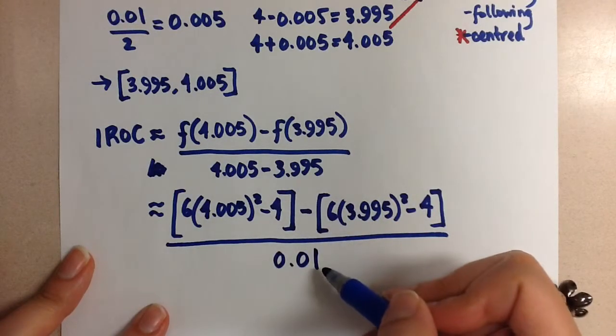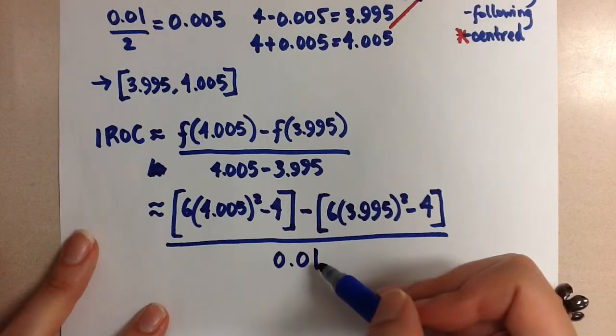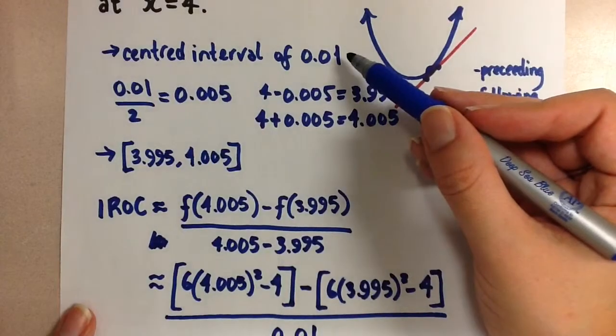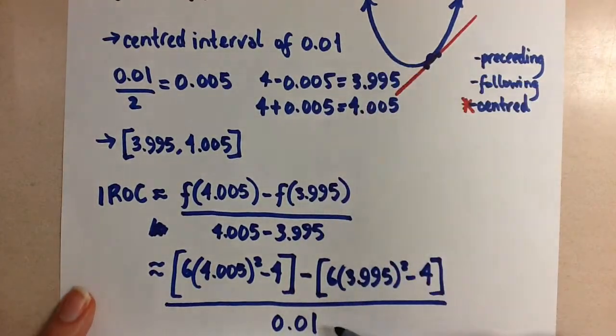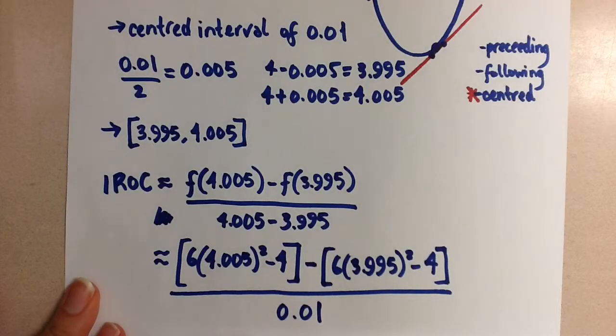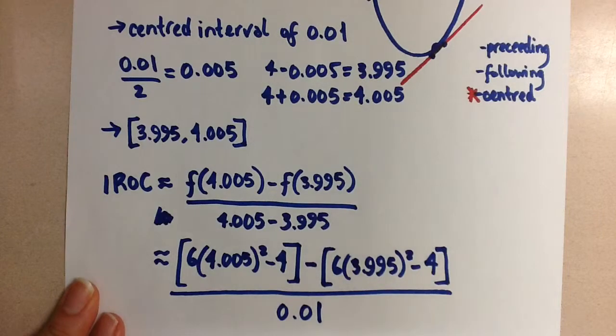This is good. If we've done our interval correctly, the denominator should always match the length of the interval that we chose at the beginning. So these two numbers have to match. Let's continue and calculate this. So here we get approximately 92.2402 minus 91.7402, and then over 0.01.